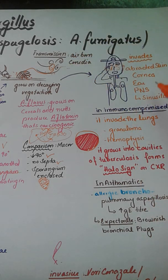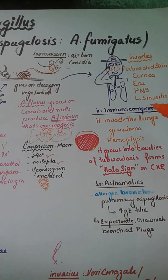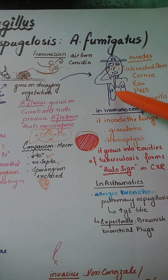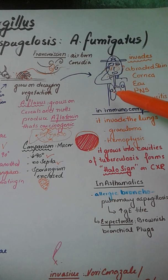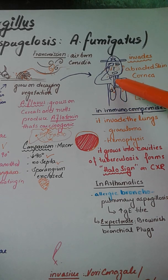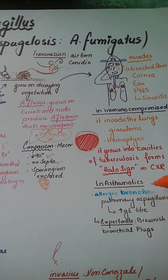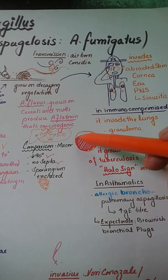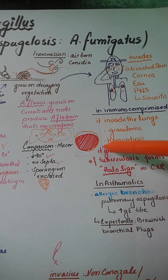Those are relatively mild fungal infections, but in an immunocompromised patient the organism can enter the lungs and form granulomas. If the patient was previously affected by tuberculosis, TB heals by forming cavities. Aspergillus will colonize those cavities and form a specific radiological finding visible on X-ray known as the halo sign, representing the fungus filling the cavity.